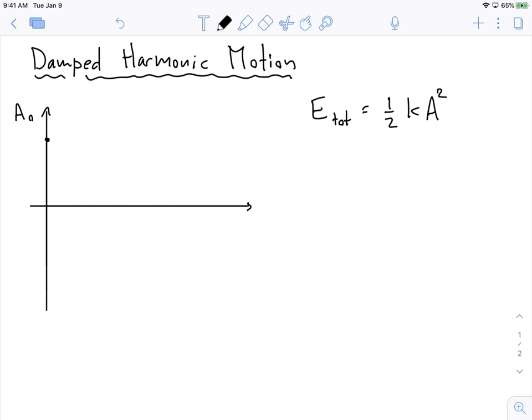But in a real system, energy is actually being lost, and so what happens is the amplitude of the oscillation decreases as energy is being lost. So what that looks like is if we start with some oscillation, instead of the amplitude being constant the whole way, the amplitude decays.